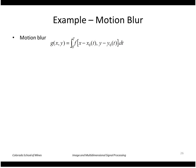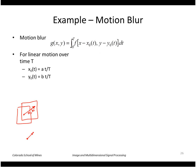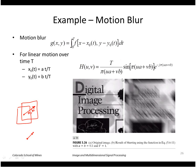Motion blur is what you get when you take a picture while moving the camera during the exposure. We can model this as a trajectory x(t), y(t) and integrate our function over that path, adding up the intensities along the streak. For linear motion over time T, the trajectory is x = a·t/T and y = b·t/T. That gives us our degradation function, whose transform has a specific form. Here is the result of simulating motion blur on an image.